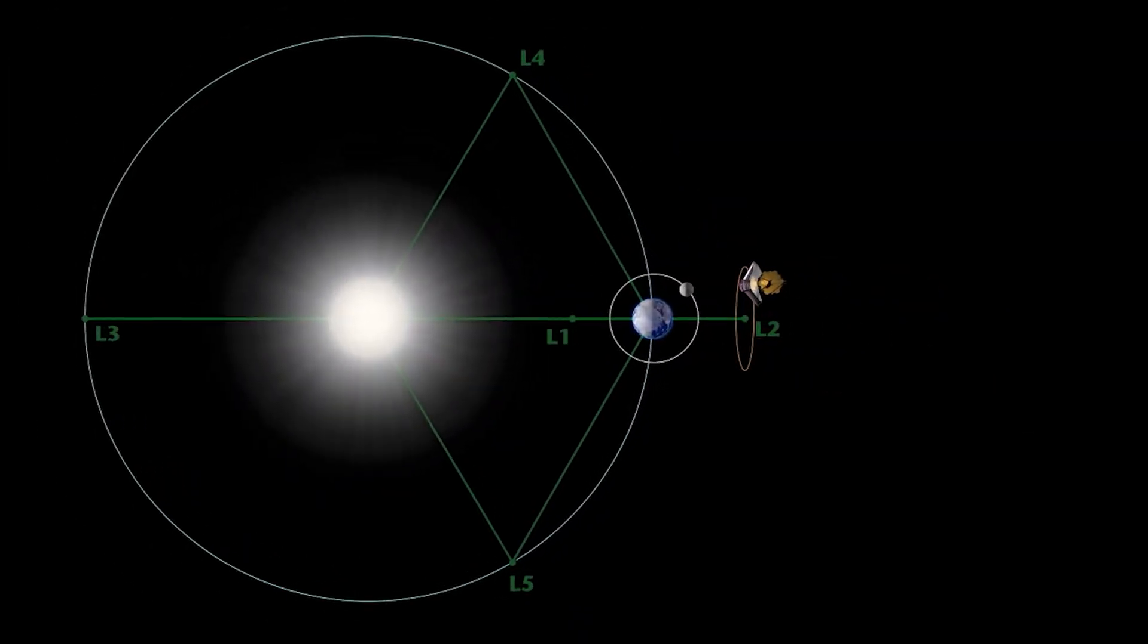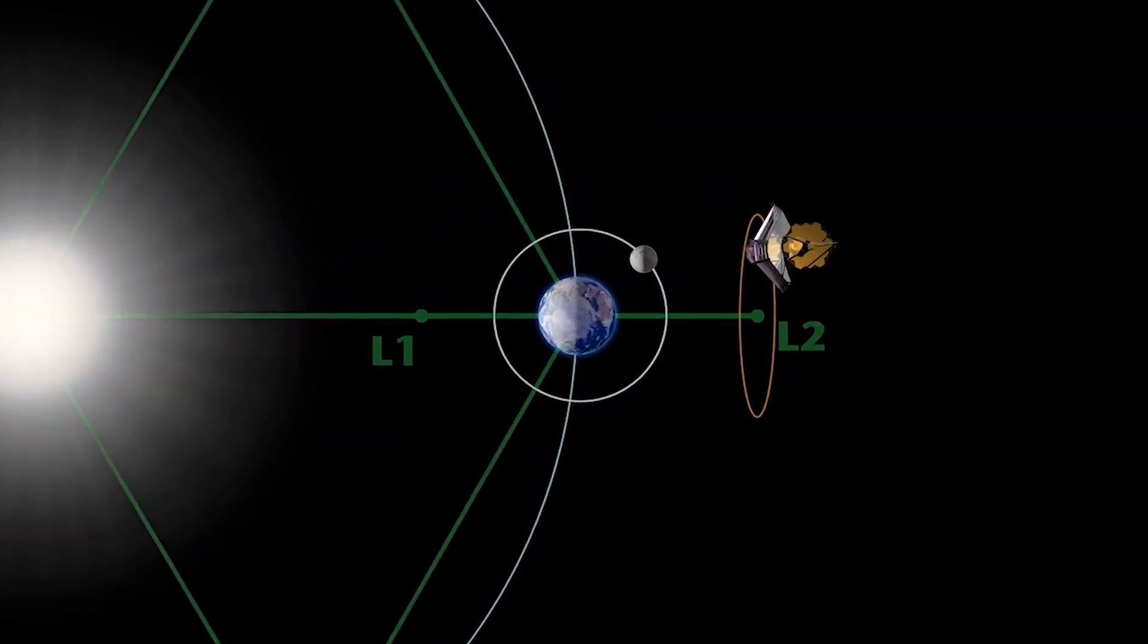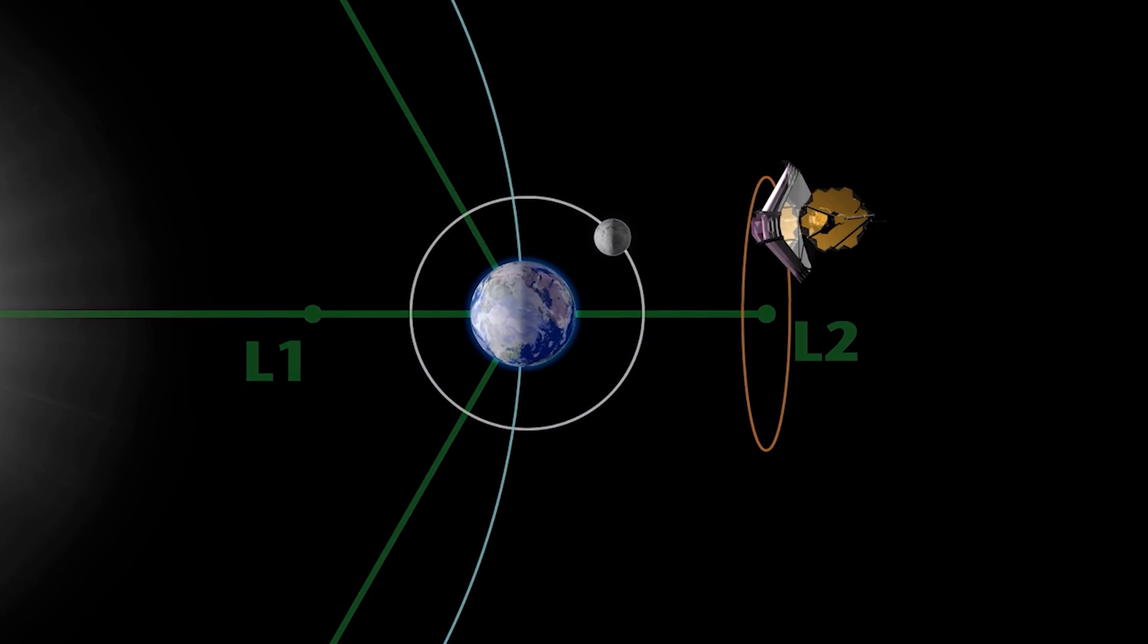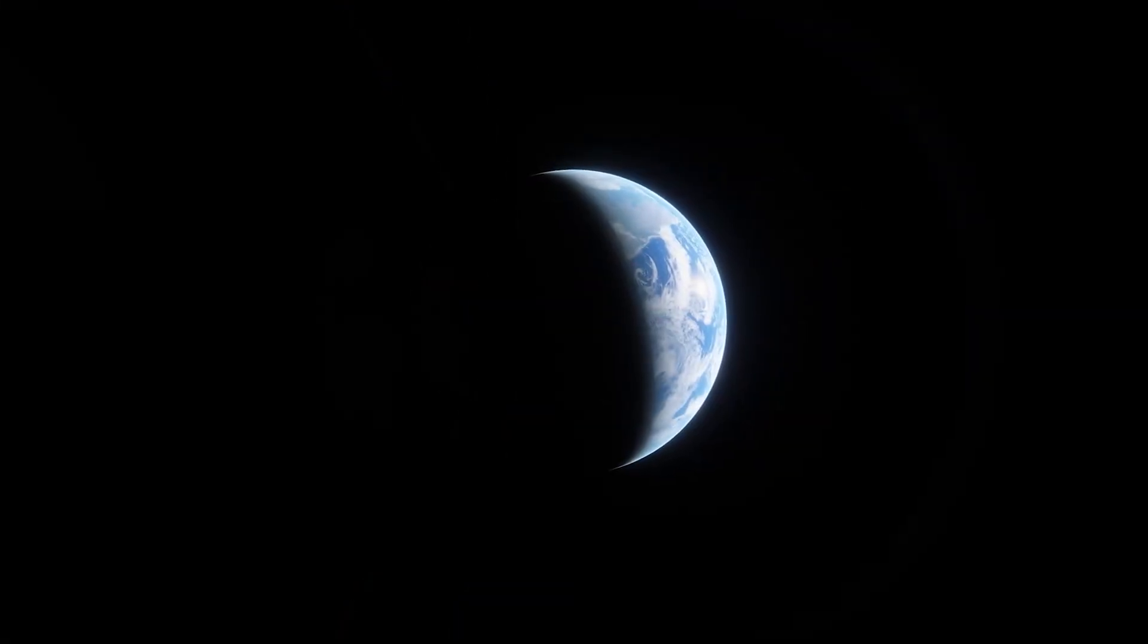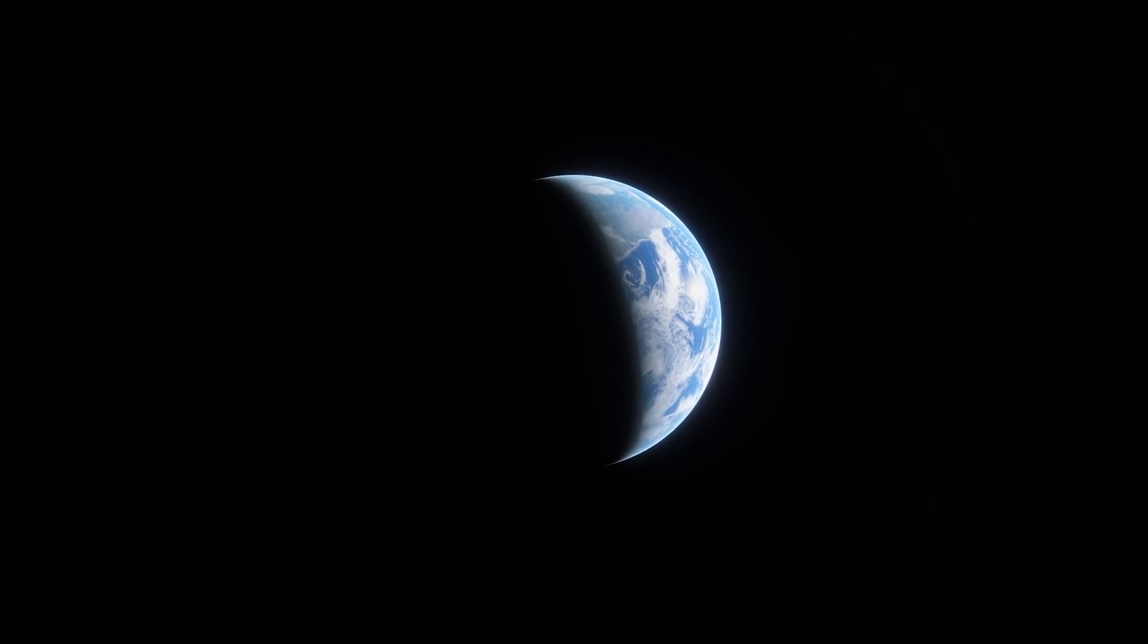In addition, JWST's orbit around the Earth aligns with the orbit of Proxima b, allowing full observations of its diurnal and nocturnal cycles in 11.2 Earth days.